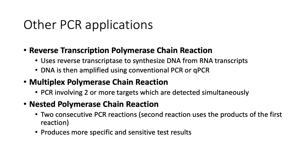Multiplex PCRs usually have different probes that have different colors, so they can be detected independently of each other. Finally, we have nested PCR. This technique uses two consecutive PCR reactions, in which the second reaction uses the products of the first, producing more specific and sensitive test results.